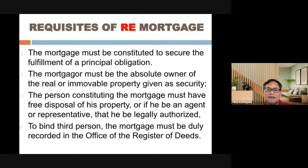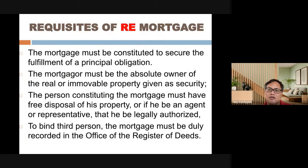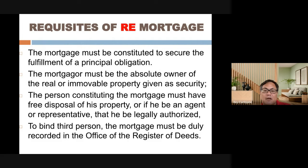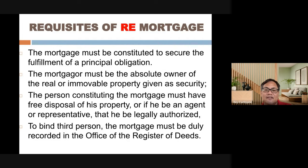Moving on to the contract of mortgage: a mortgage is a contract where the debtor guarantees the fulfillment of the principal obligation to the creditor, secured by real property, in case of non-fulfillment within the agreed period. The debtor offers real property as collateral, and the contract they enter is a mortgage contract. Requisites include: the mortgage must be constituted to secure the fulfillment of a principal obligation, and the mortgagor must be the absolute owner of the real property given as security.